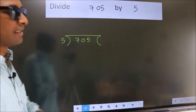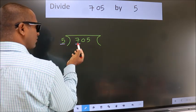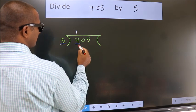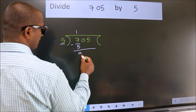Next, here we have 7, here 5. A number close to 7 in 5 table is 5 once 5. Now, we should subtract. We get 2.